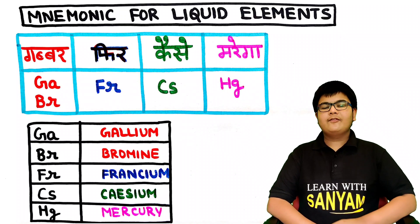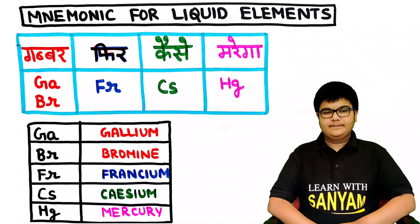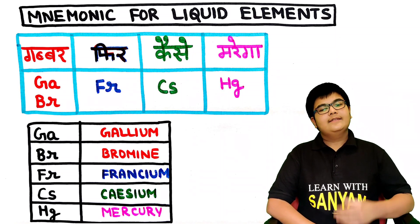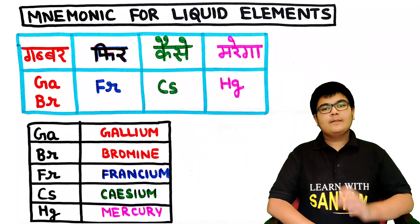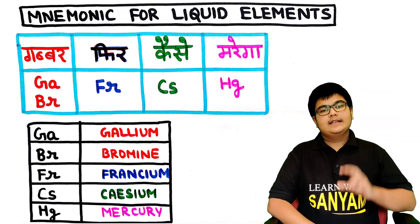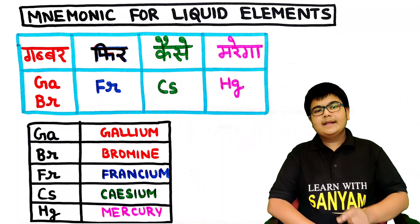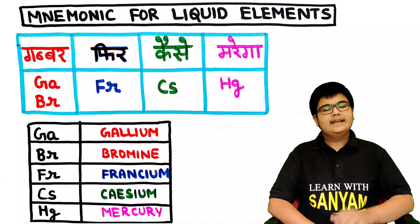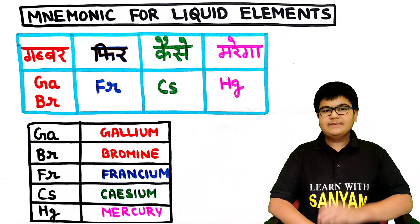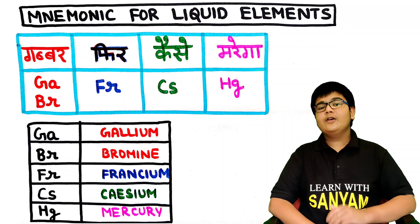Now let's see the mnemonic for liquid elements. Again it is in Hindi: gabbar fir kaise marega. There is a person named Gabbar and we are thinking about how Gabbar will meet his end — gabbar fir kaise marega. From 'gabbar', G stands for gallium and 'bar' stands for bromine. 'Fir' stands for Fr, that is francium. 'Kaise' stands for Cs, that is cesium. And 'marega' stands for mercury.